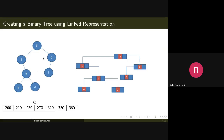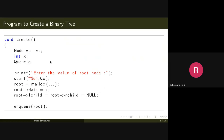Once created, the tree looks the same as the original, but nodes are at different memory locations — for example, 200, 210, 230, and so on. That's how we create a binary tree using linked representation: create the root node, enqueue its address, then dequeue it, check for left and right children, and create them accordingly.